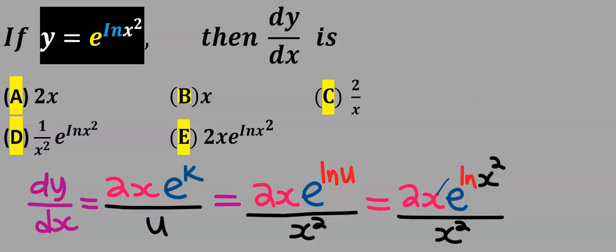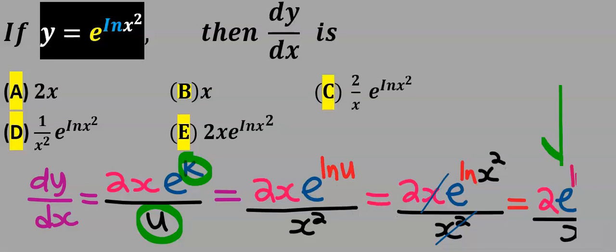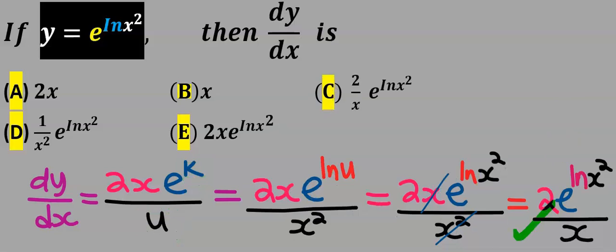Next, one x cancels one of the x in x², and this is our dy/dx. From the options, our answer is C.